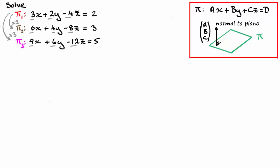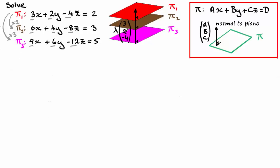So if we had the first plane, pi one, then the second plane would be pi two, and the third plane would be pi three. They all share a multiple of that normal vector, three, two, negative four, which I've taken from here. So what we've got then are three parallel, non-coincident planes.